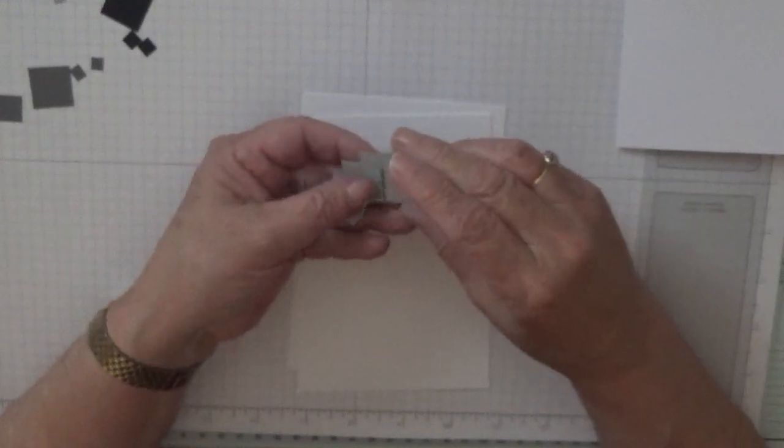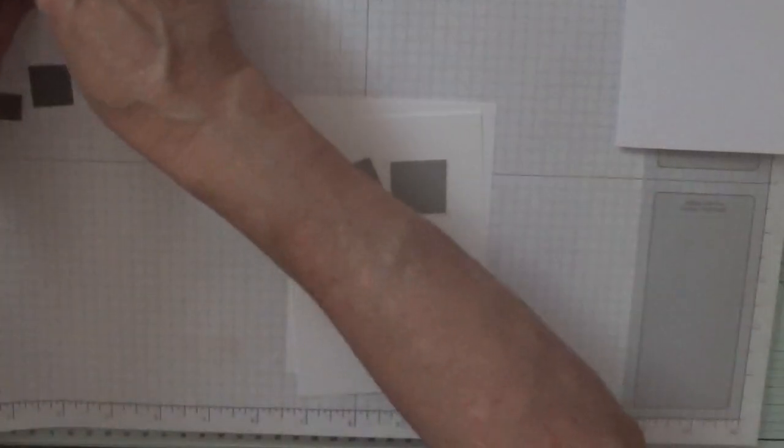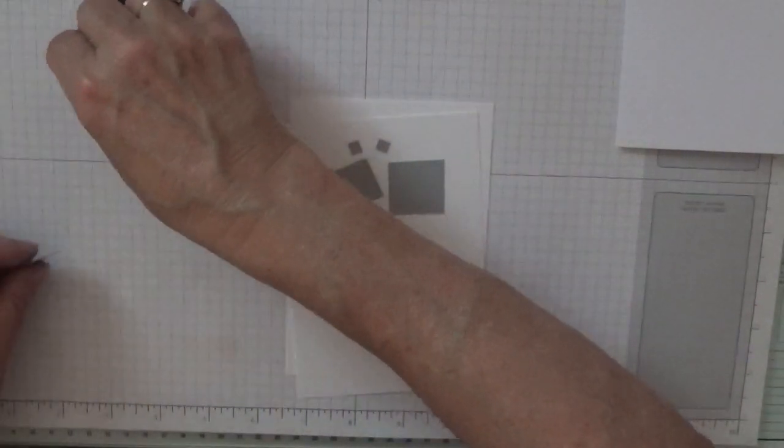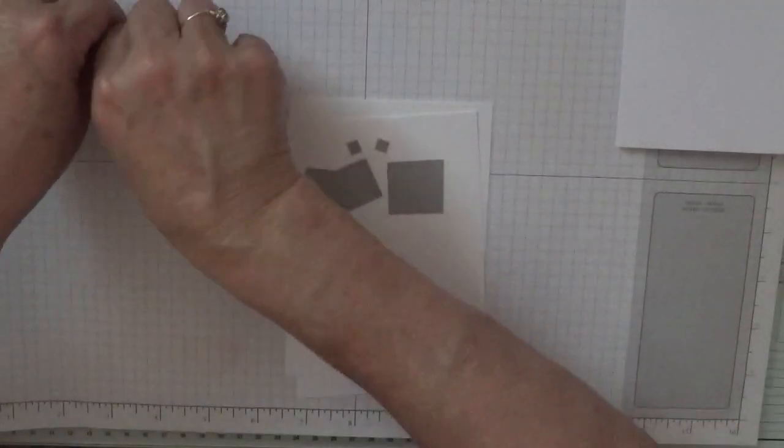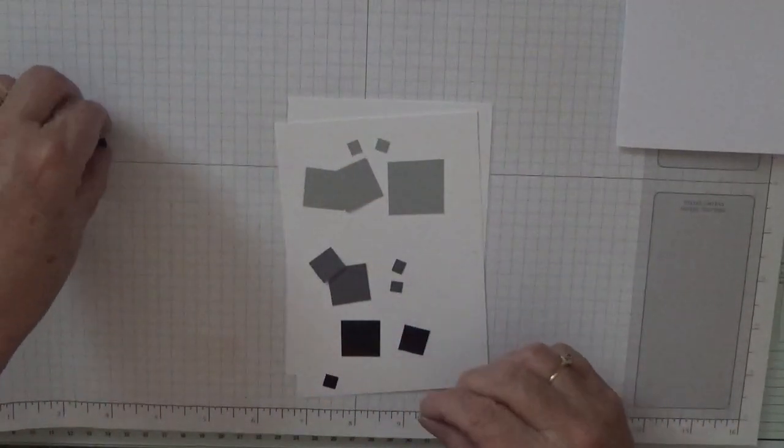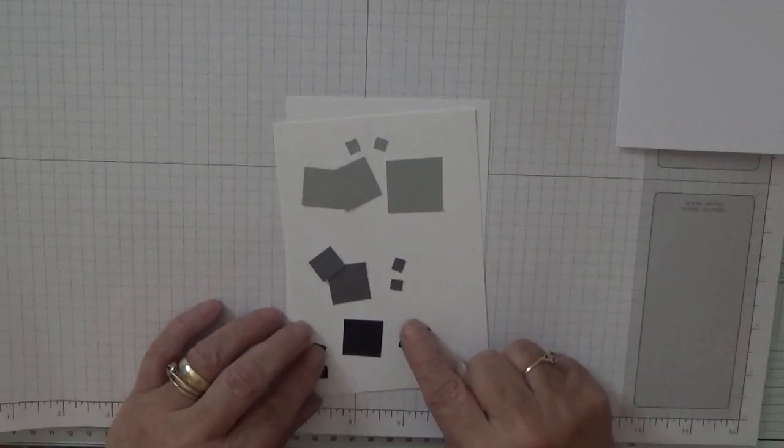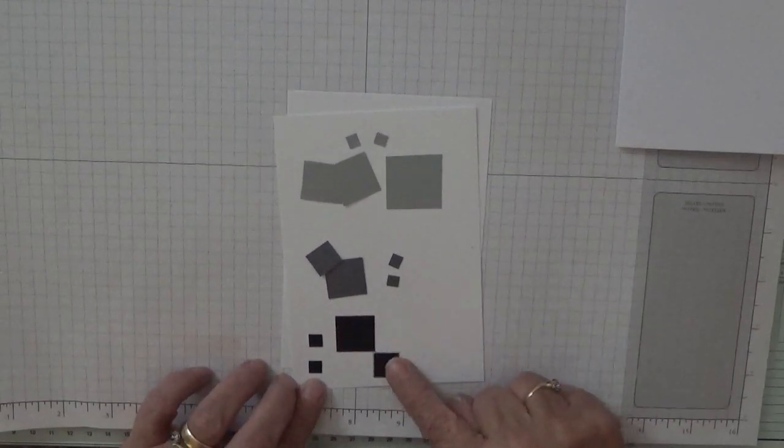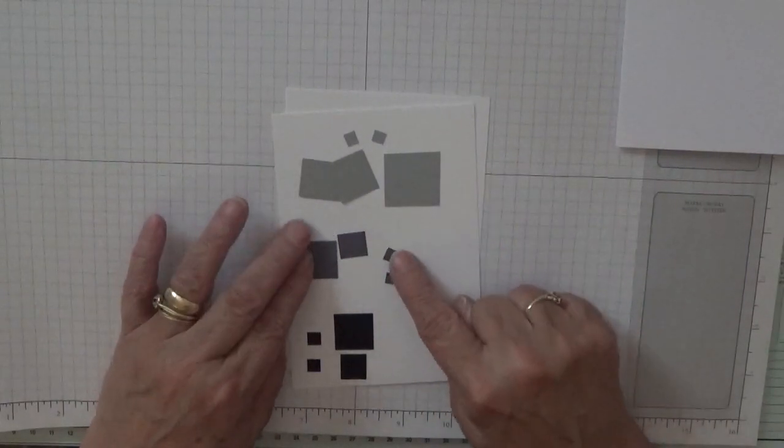Right, you'll also need some squares. I'm using three colors. These are smoky slate, these are basic grey, and these are basic black. The basic black I have got two quarter inch squares, one half inch square, and one one inch square.